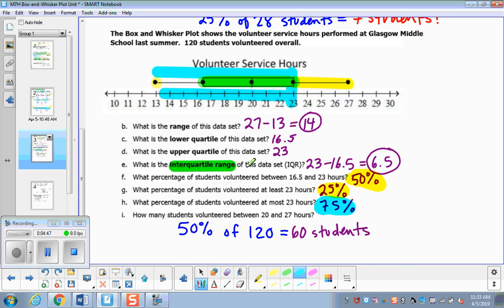And for the last question, it asks how many students volunteered between 20 and 27? So 20 to 27 is here, which would be those two sections. So 25 and 25, we get 50%. And it tells us that we have 120 students volunteered overall. So if 120 students volunteered, 50% volunteered in that range. So 60 students volunteered in that range.